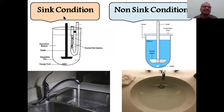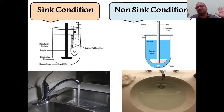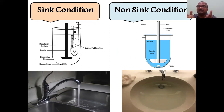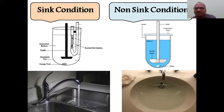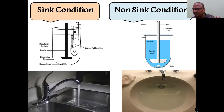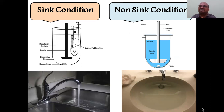In a sink system there is no accumulation — whatever water falls in goes to drainage. That is why it is called a sink system. In a non-sink system, the sink is completely blocked so drug particles accumulate and never drain away. We can also call the sink system a drainage system and the non-sink system one where the drainage is absent.